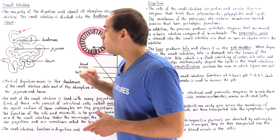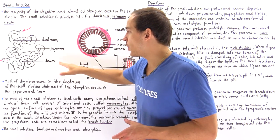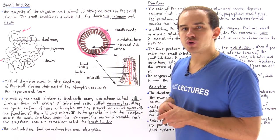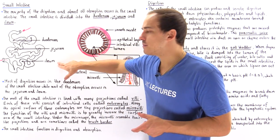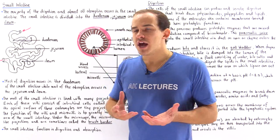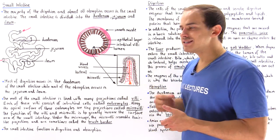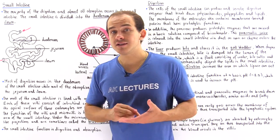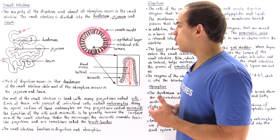The middle portion, known as the jejunum, and the end portion, known as the ileum, are where we absorb those nutrients. The intestinal cells of the jejunum and ileum, known as enterocytes, absorb those individual nutrients into the cells and then transport those nutrients into the blood system and lymph system.